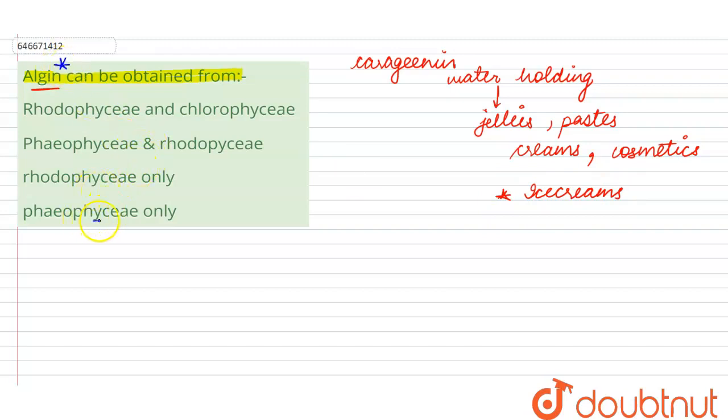Which can be obtained from Phaeophyceae only. So here option number four is the right answer for this question. That means Phaeophyceae are the brown algae and they are the source of this algin or water holding substance.